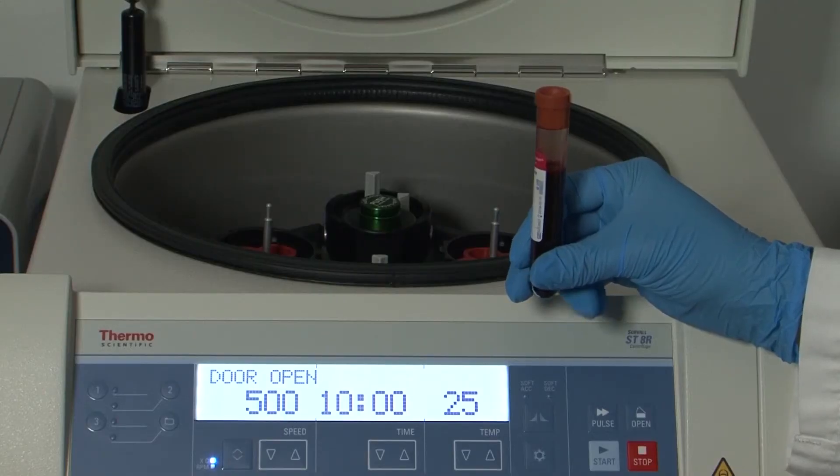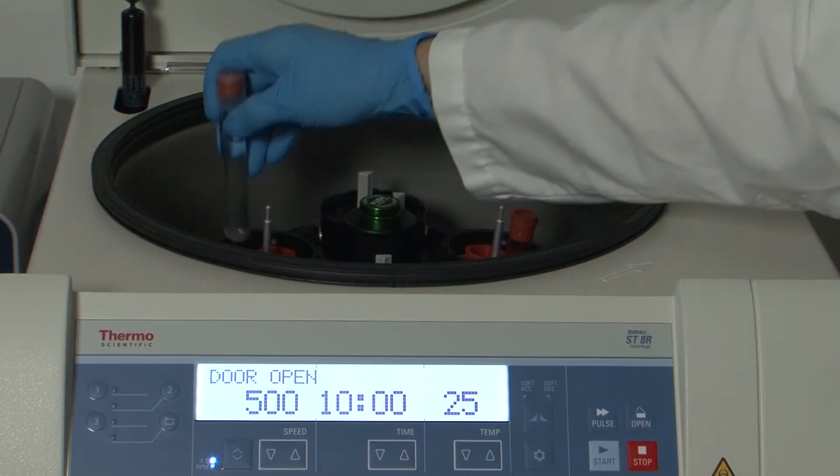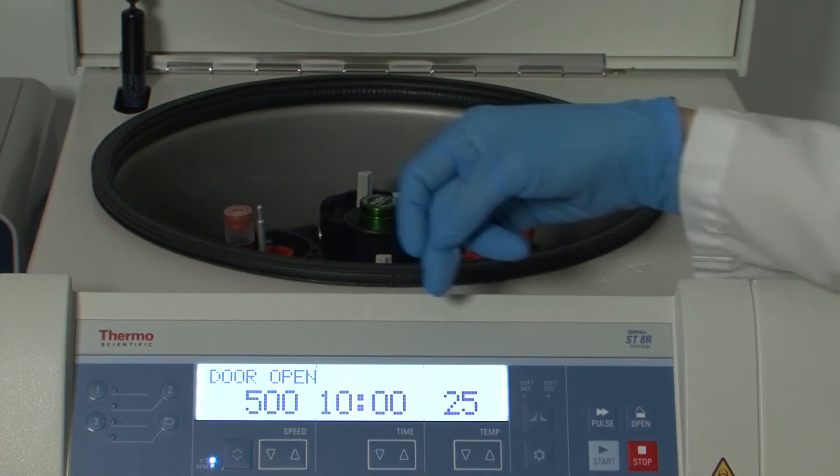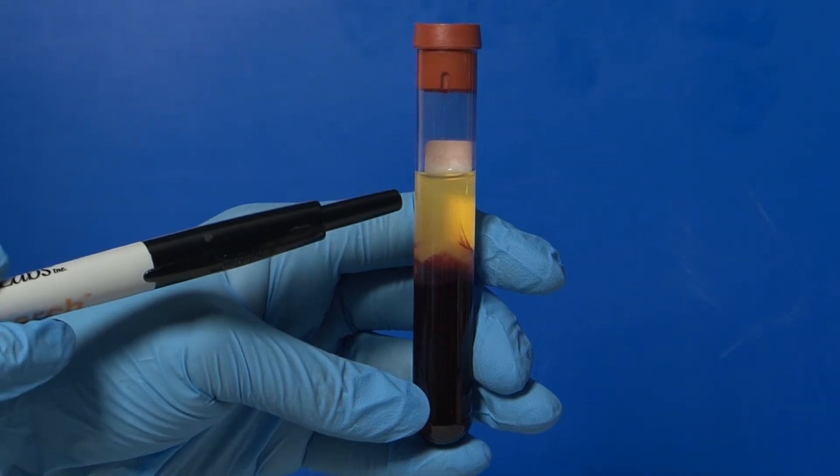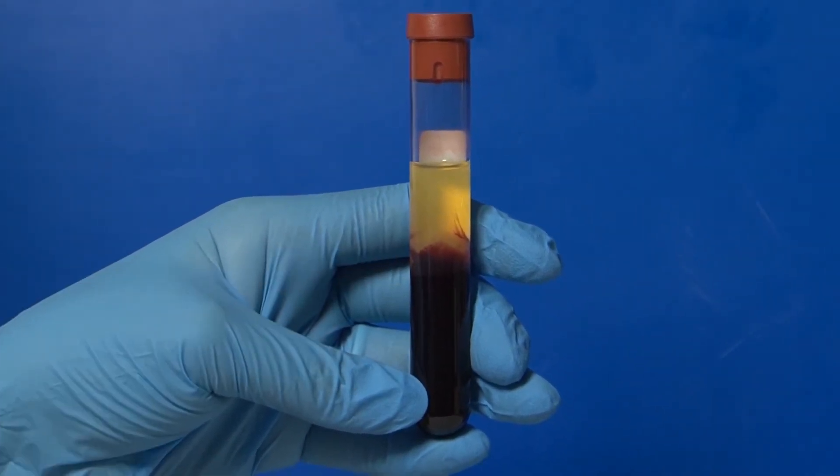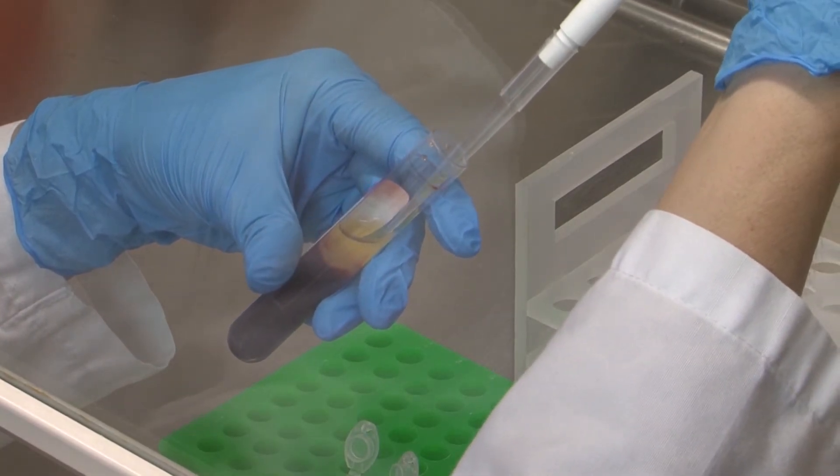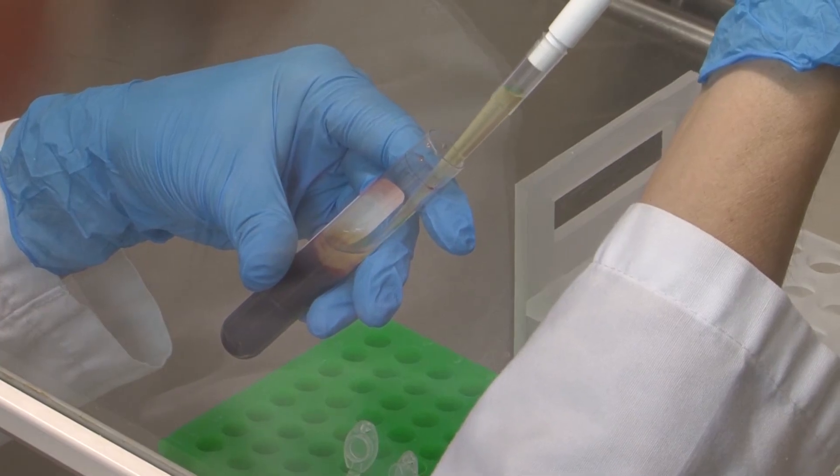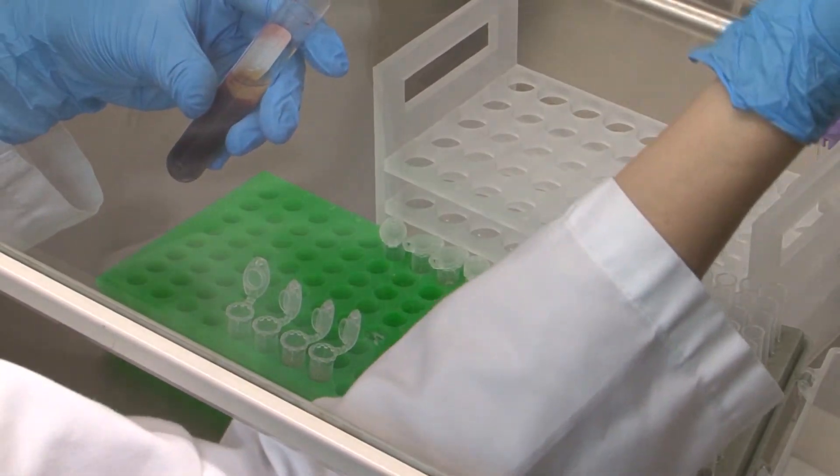The procedure with the red top tubes is the same. The only difference is that serum will be extracted rather than plasma. Centrifugation is again done at room temperature at a minimum of 500g for 10 minutes. Serum, which is the yellow fluid layer at the top of the tube, will be distinct from the blood clot. Serum can be separated from the blood clot using pipettes into one milliliter units and placed into plastic tubes. Care should be taken not to disturb the clotted portion of blood within the red top tube.